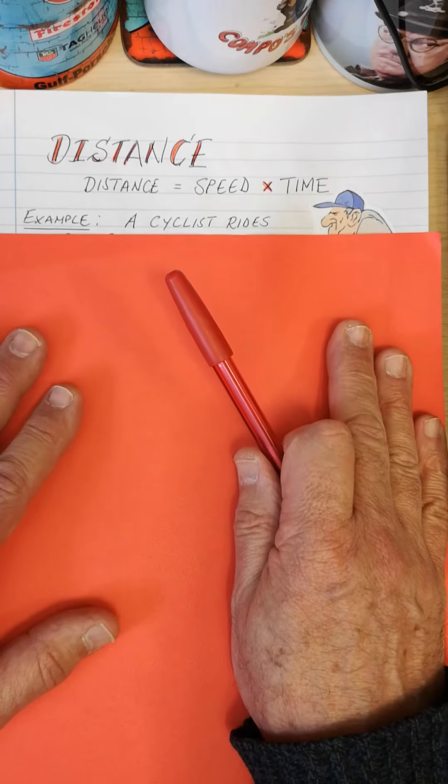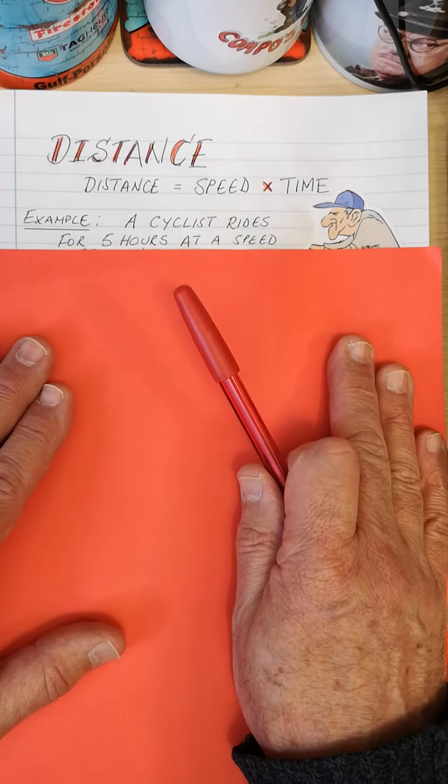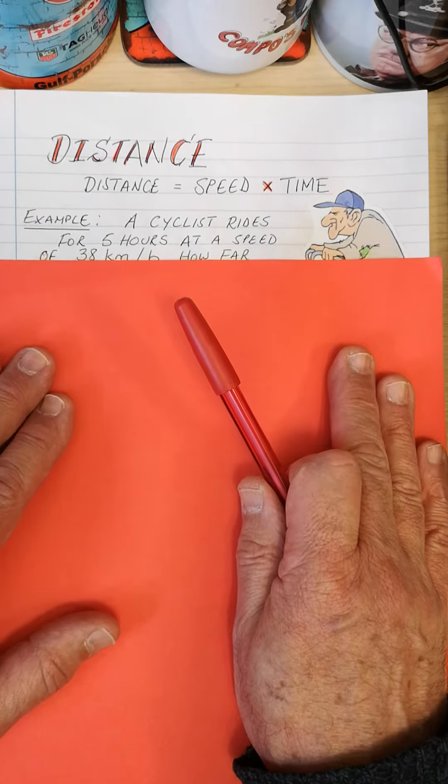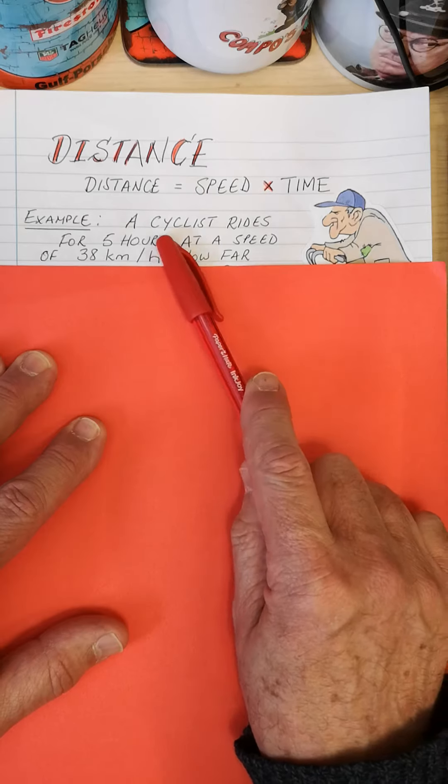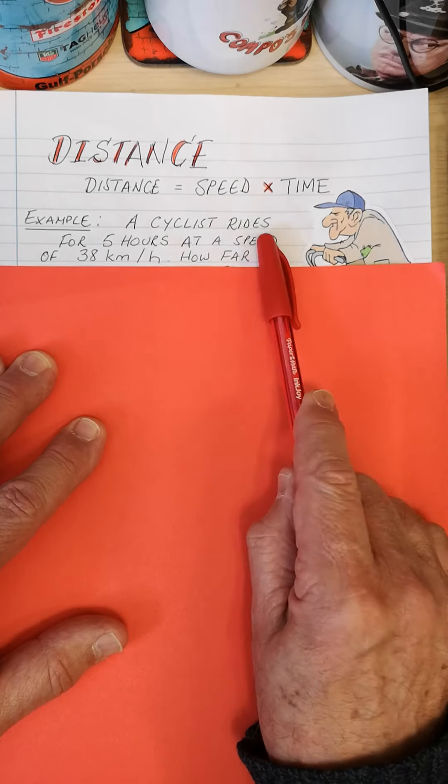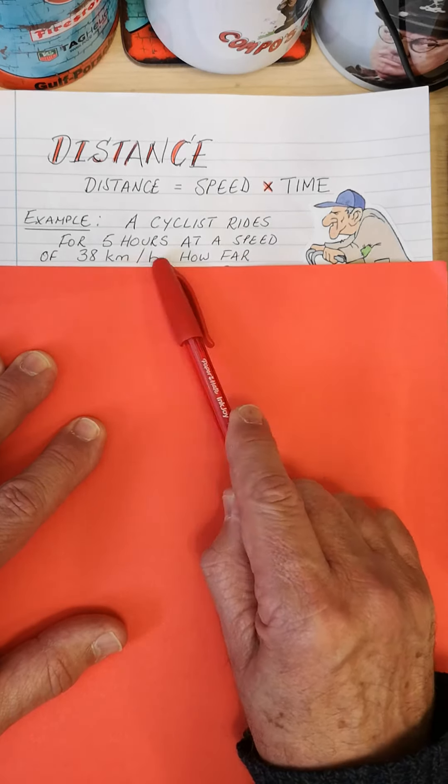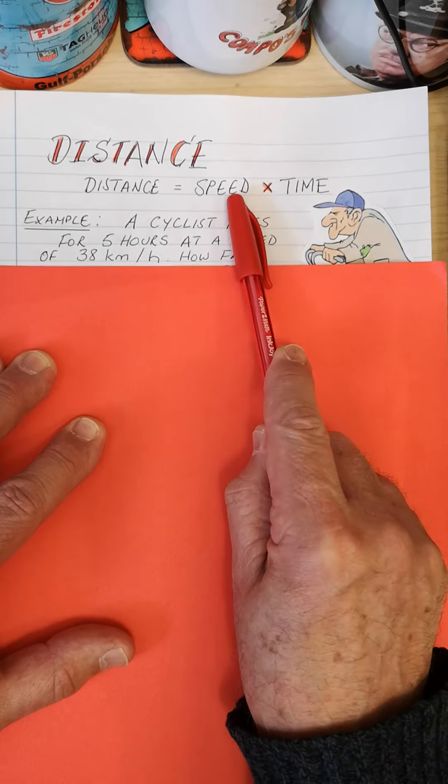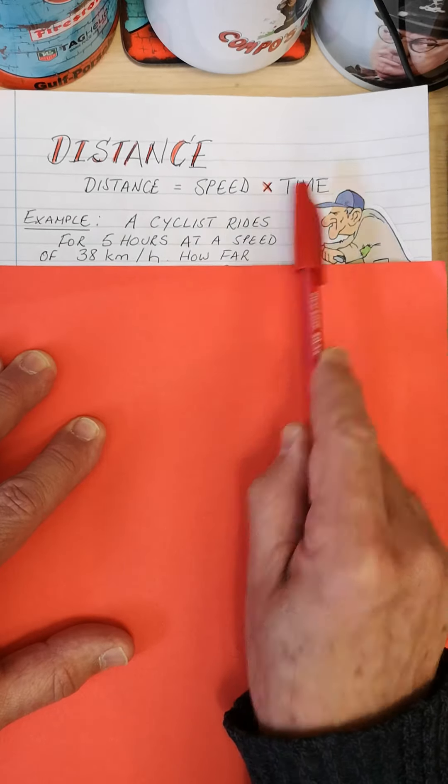Now, in this video, we are going to be looking at distance and working out distance. When we're doing distance, it's always speed multiplied by time. So speed times time will give me the distance.